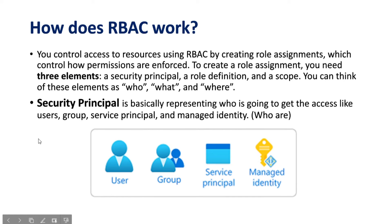To understand how RBAC works: you control access to resources using RBAC by creating a role assignment. To create a role assignment you need three elements — a security principal, a role definition, and a scope. You can think of these as who, what, and where. The security principal is the representation of who is going to get access: users, groups, service principals, and managed identities.